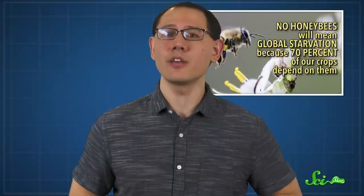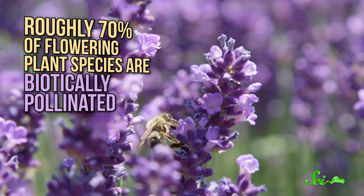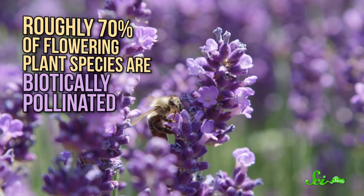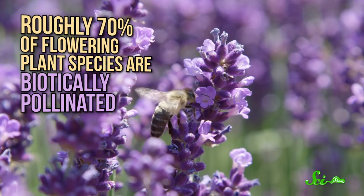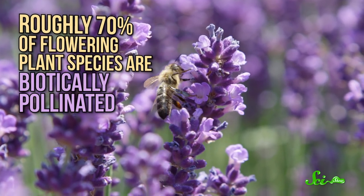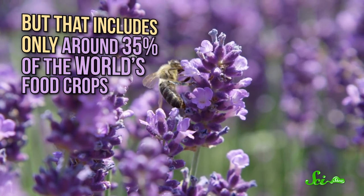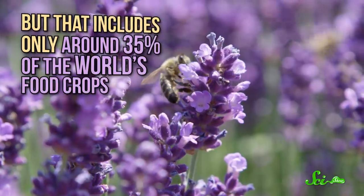Let's start with that 70% of all crops number, since that's the one we hear the most. It seems to be a mistaken extrapolation. It's true that roughly 70% of flowering plant species are biotically pollinated, which means they need some sort of third-party creature to do the pollinating for them. But that includes only around 35% of the world's food crops.